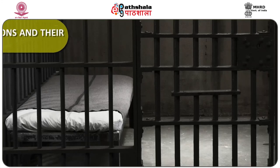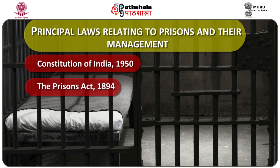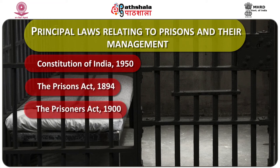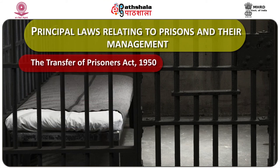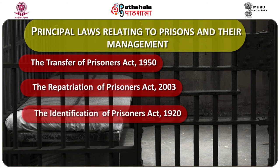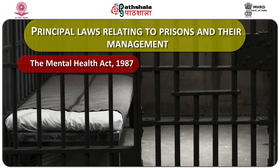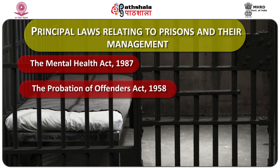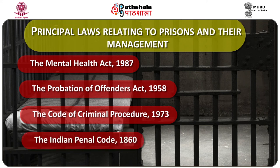The principal laws relating to prisons and their management include: the Constitution of India, the Prison Act of 1894, the Prisoners Act of 1900, the Prisoners Attendance in Courts Act 1955, the Prisoners Act of 1950, the Repatriation of Prisoners Act 2003, the Identification of Prisoners Act 1920, the Model Prison Manual of 2003 and 2016, the Mental Health Act of 1987, the Probation of Offenders Act 1958, the Code of Criminal Procedure 1973, and the Indian Penal Code of 1860.